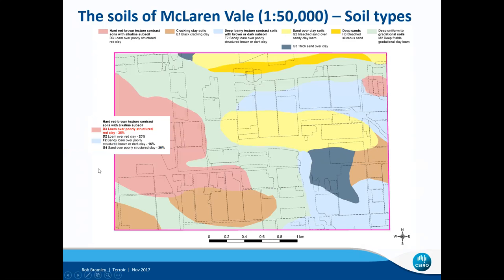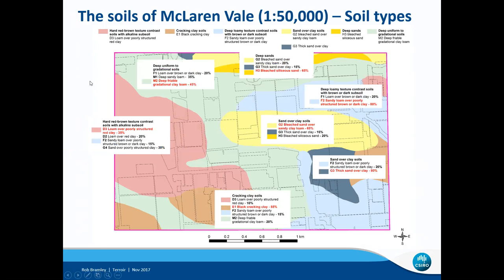Much the same thing can be said about all the other different soil types. For instance, this pale green one is classified as deep uniform gradational soils dominated by the M2 soil type — a friable gradational clay loam — with a 45% chance of that being the soil that occurs. But you could also have a loam over brown or dark clay with a 20% chance of occurring. Again, there would be expected to be marked differences in the expression of terroir between those soils.